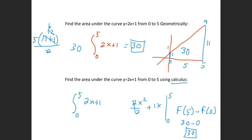We get the same answer regardless of which method we use. The geometric method works really nicely if you have linear functions. But if I gave you x squared minus 3x plus 5, good luck trying to find the area using geometry — it's not going to work. However, using calculus, you could find it easily.